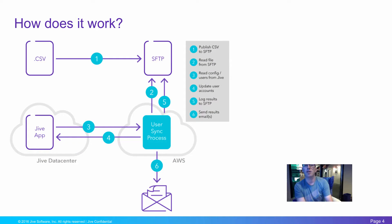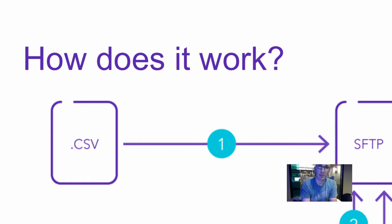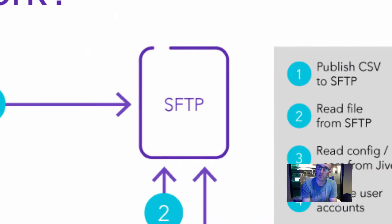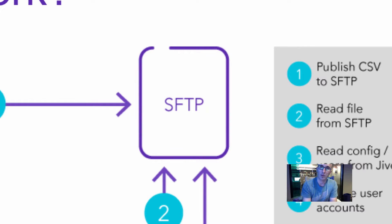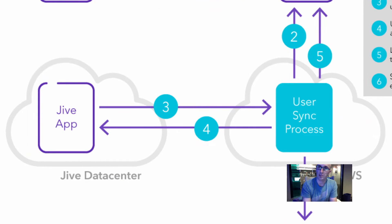But how does it work? Well, easy. The first thing that you'll do is produce a CSV file that contains a list of all the people profiles that you want to have synchronized across into your Jive community. From there, you'll upload the file to an SFTP server, which can either be your own SFTP server, or Jive's SFTP server if you prefer. From there, the UserSync process will run on a scheduled basis and download the file from the SFTP server, make a lookup call to your Jive community to get the configuration for the sync, and then process the necessary updates, creates, and disables, in addition to whatever org chart and security group updates you may have.